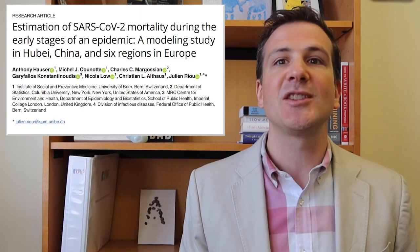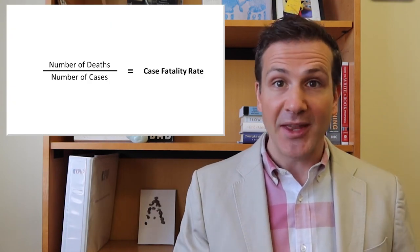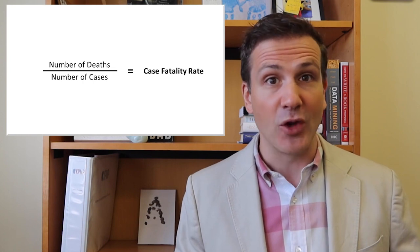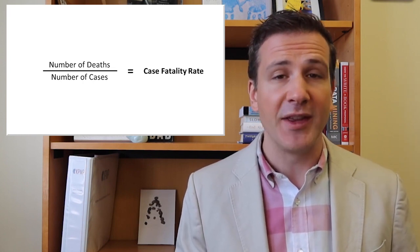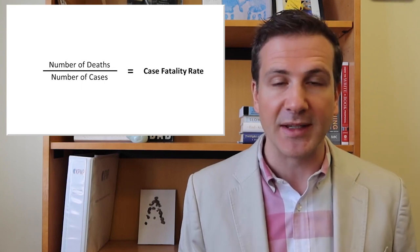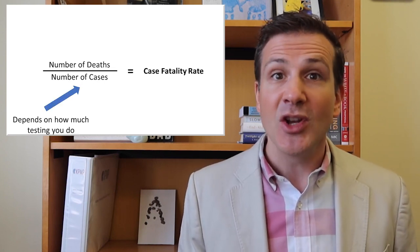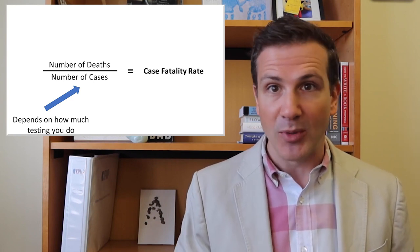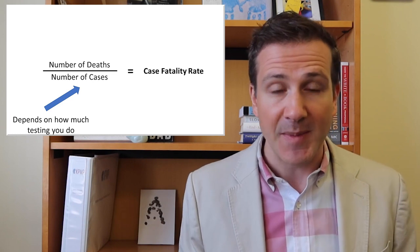The first problem gets talked about a lot. The case fatality rate is defined as the number of deaths from COVID-19 divided by the number of cases of COVID-19. If you assume we aren't capturing all the cases of COVID-19 — and at this point the evidence is overwhelming that we're missing a large proportion of cases — then the case fatality rate becomes really dependent on the denominator: how many people you can test. We tend to test those who are symptomatic, for example.